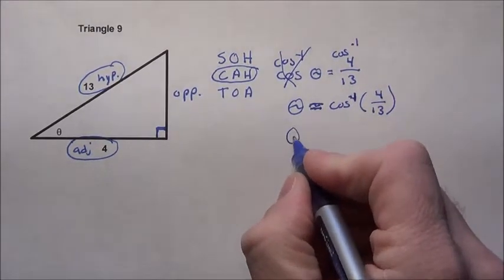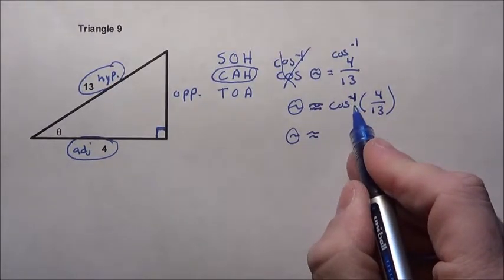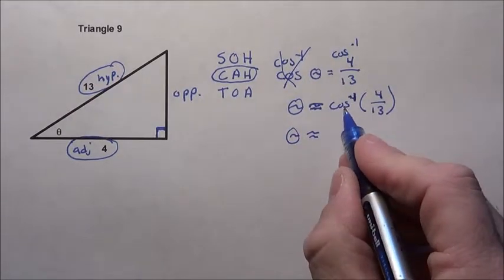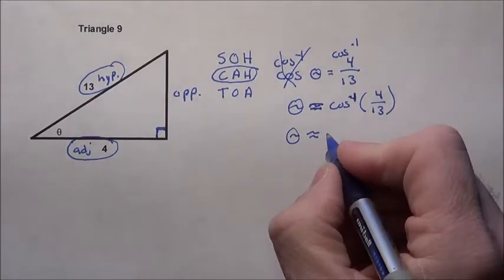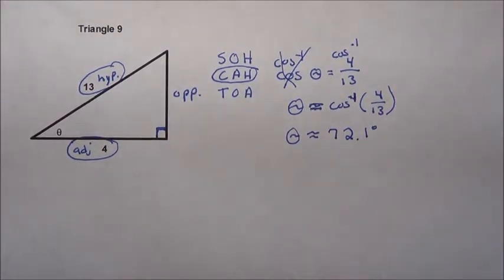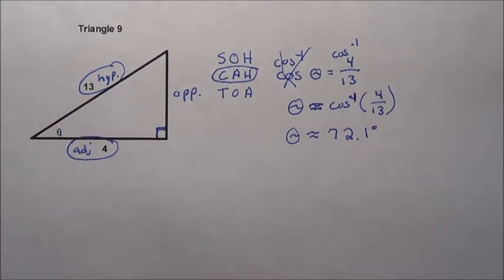I get my calculator, I put it in degree mode, and I type inverse cosine—usually that's found under the second and then the cosine button. So I do the inverse cosine of 4 divided by 13. When I did it earlier, 72.1 degrees is what my graphing calculator said. So this angle right here is about 72.1 degrees.